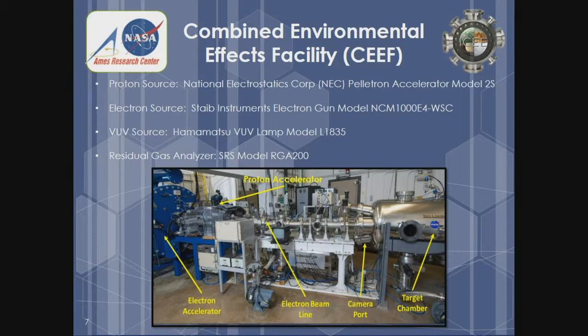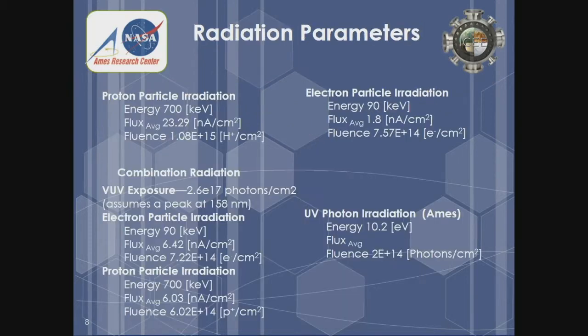The facility is actually set up to expose satellites to solar wind, so we're using the solar wind in this instance to do our chemistry. It has a proton accelerator going into this vacuum chamber as well as a high energy electron accelerator and a UV light source. The energies we used were about 700 keV protons and 90 keV electrons. The UV-only experiments were done at NASA Ames in our laboratory with a hydrogen discharge lamp using 10.2 eV. We tried to match the fluence as much as possible between the samples.